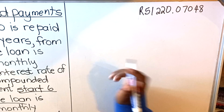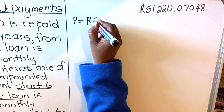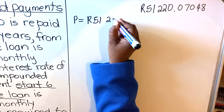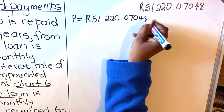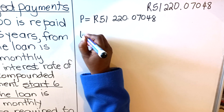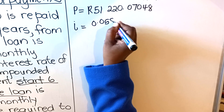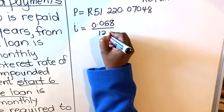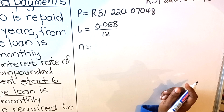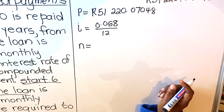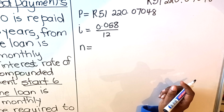Now write what you are given for the second part. Your P is now R51,220.07048 — the amount you actually owe when payments begin. Your interest rate i is the same: 0.058 compounded monthly, so divide by 12.